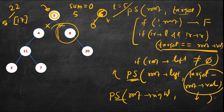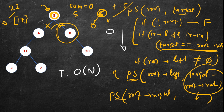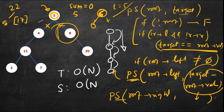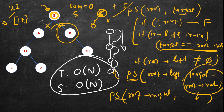The time complexity in the worst case is O(n), since we may end up traversing the complete tree. The space complexity is also O(n), because in the case of a skewed tree the recursive calls stack up to n levels deep.